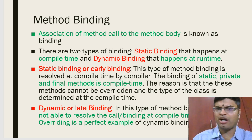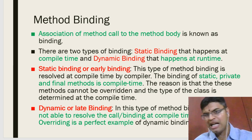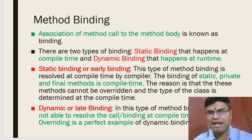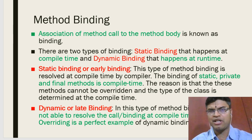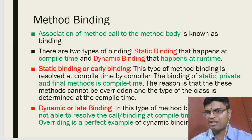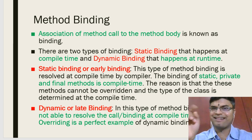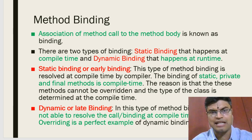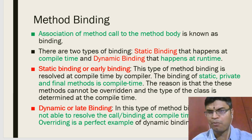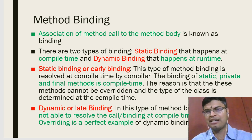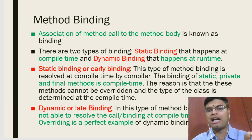There are two types of method binding: static binding and dynamic binding. Static binding means the binding of the address of the function body with the function call is made at compile time. It is also called early binding. The binding occurs before you start executing the program.